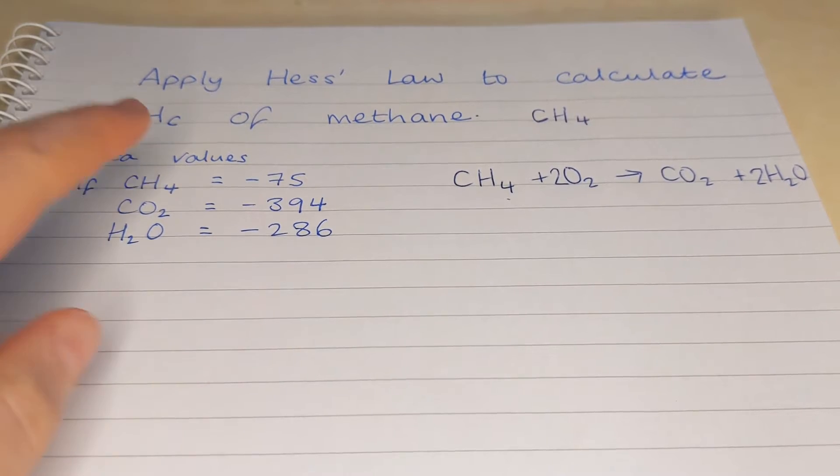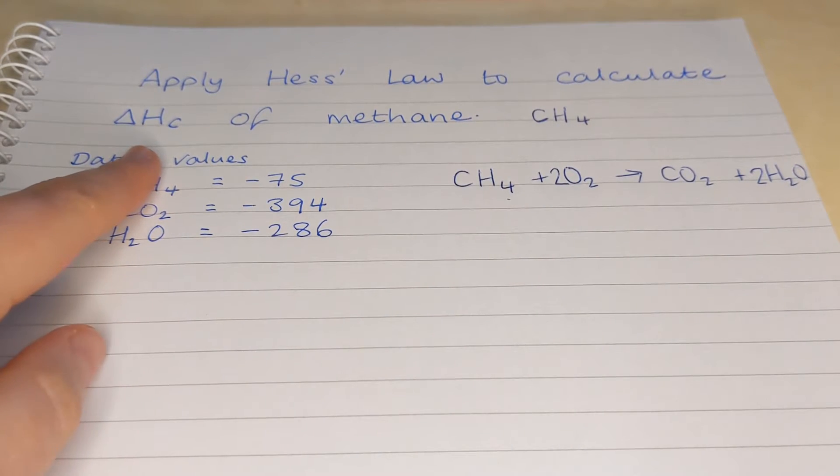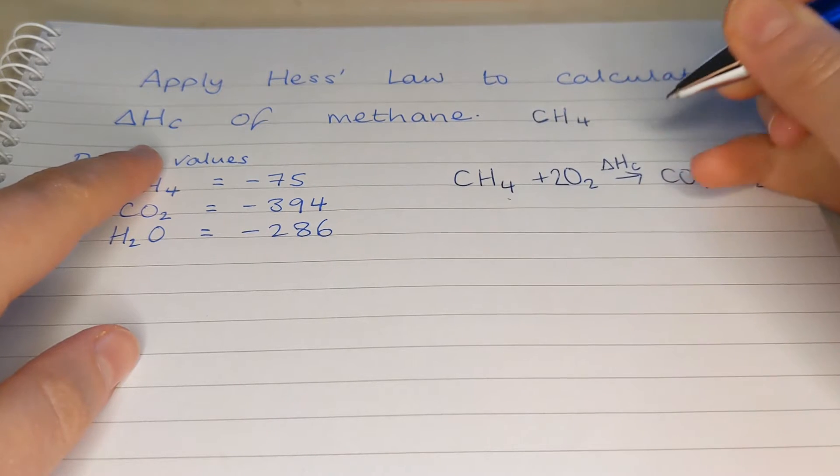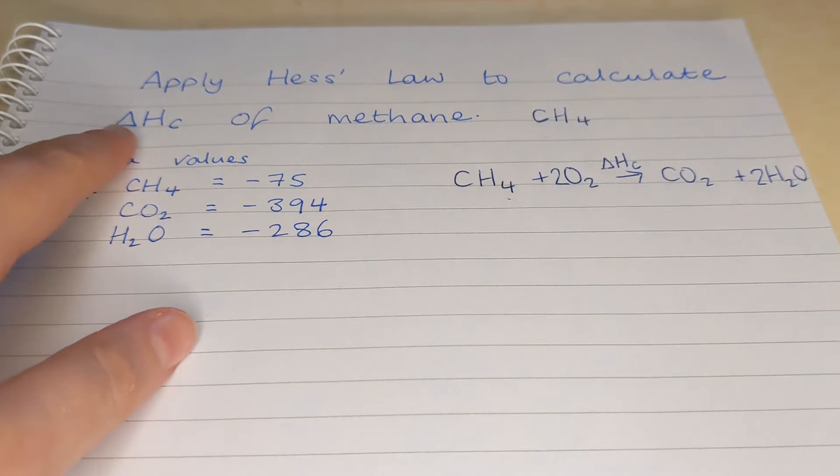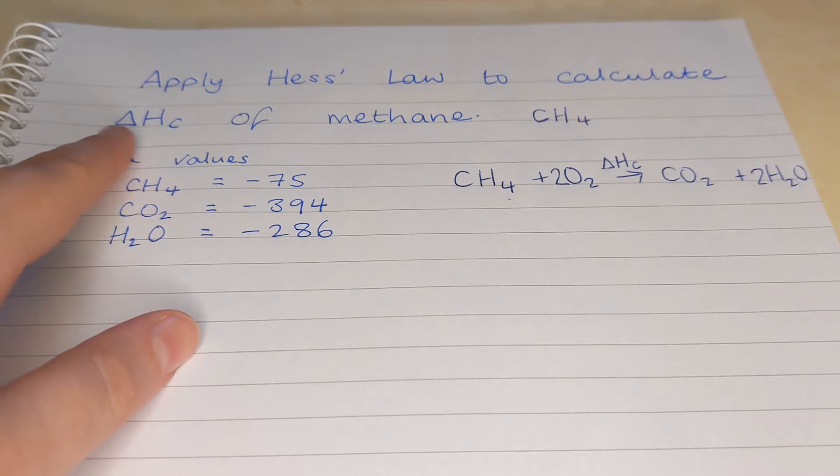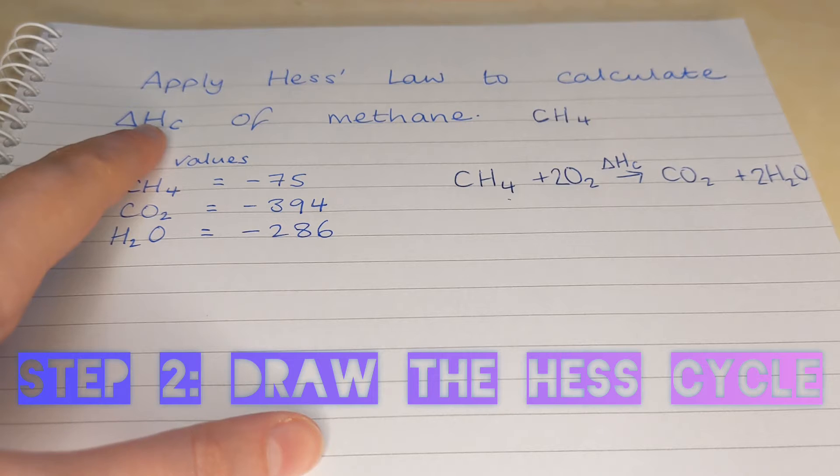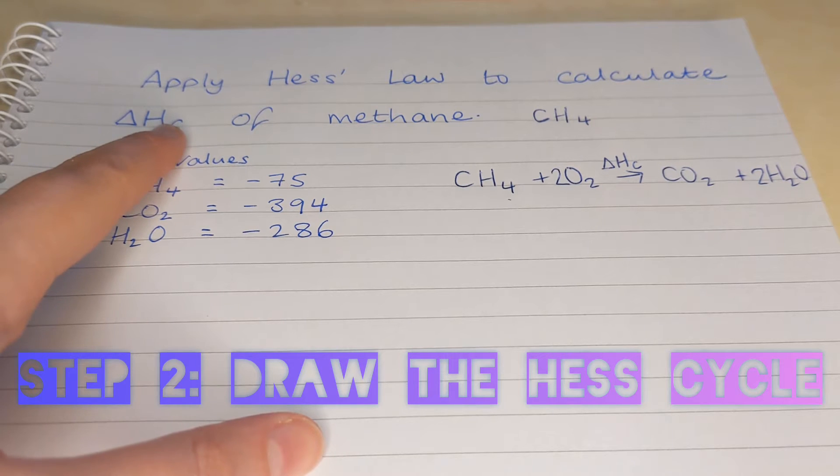And since we want to calculate an enthalpy of combustion, that's what I'm going to write over this arrow. So delta, that triangle, that triangle is a Greek symbol called delta. It means change in, capital H, enthalpy, little c, combustion.